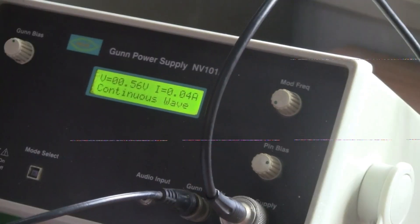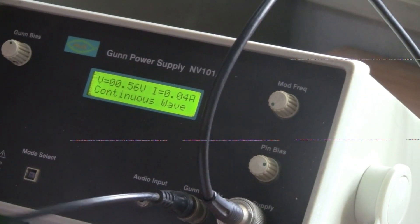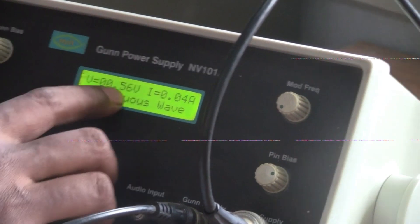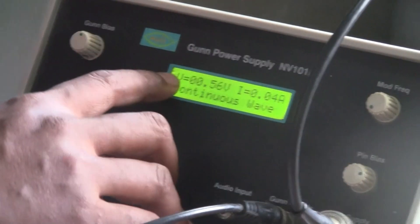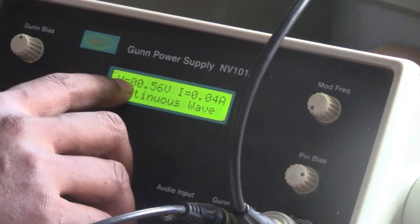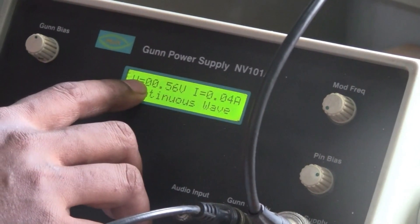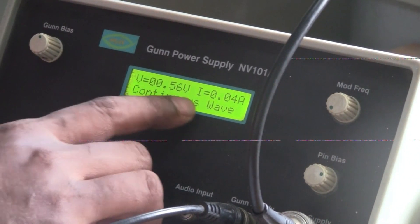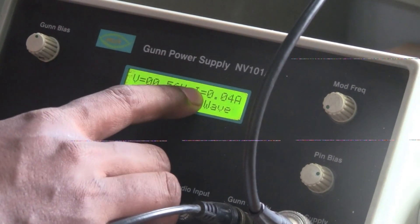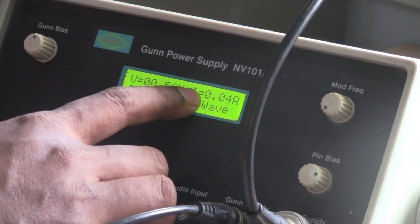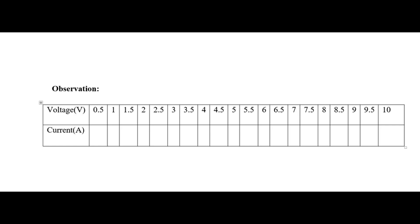This is the Gunn bias knob — keep it in the minimum position. This is the Gunn voltage meter and this is the Gunn current meter. Keep the Gunn bias supply voltage at the minimum position before starting the experiment.